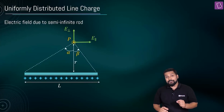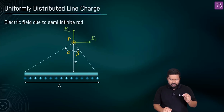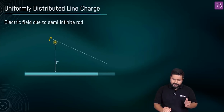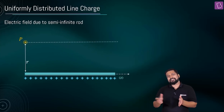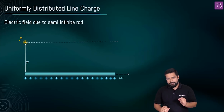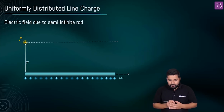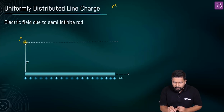Now talking about the semi-infinite rod. We'll again start off with the same finite rod setup. A semi-infinite rod means one end is finite and the other end extends to infinity. At point P, I need to find the net electric field. There are two components: the parallel component and the perpendicular component. What has changed are the angle values — in this case, alpha is equal to zero degrees and beta is equal to 90 degrees.